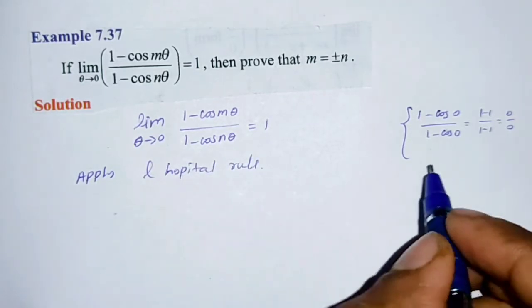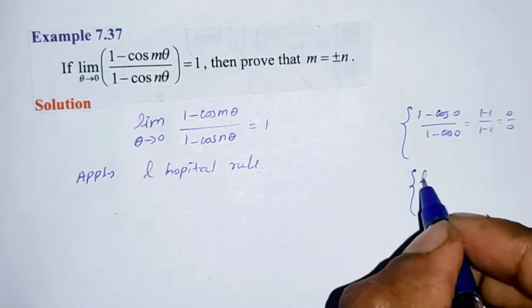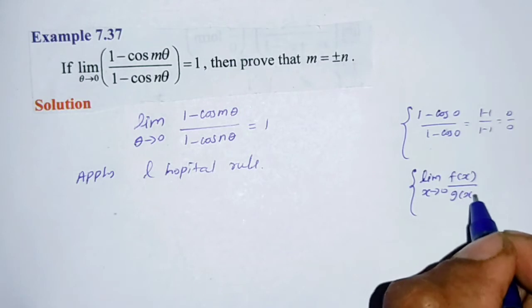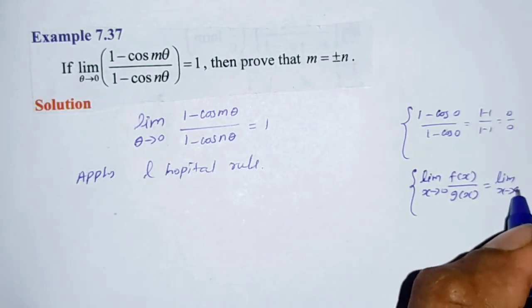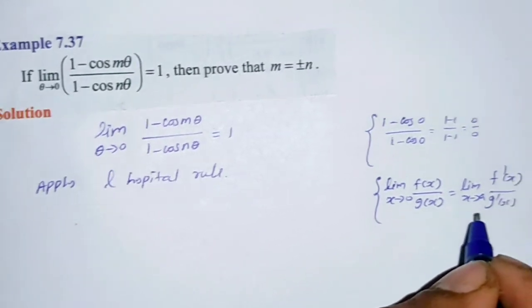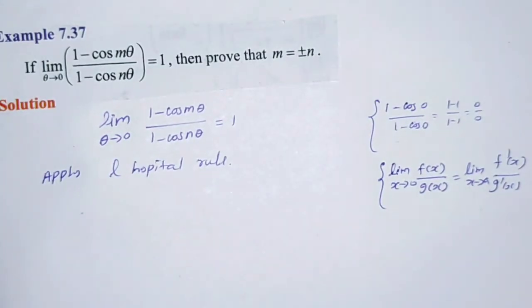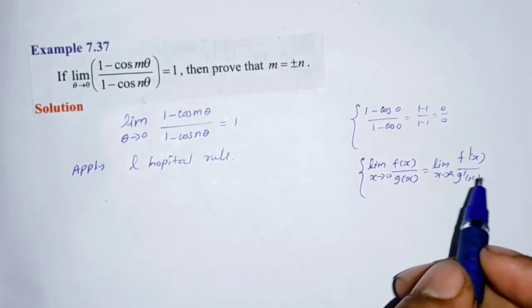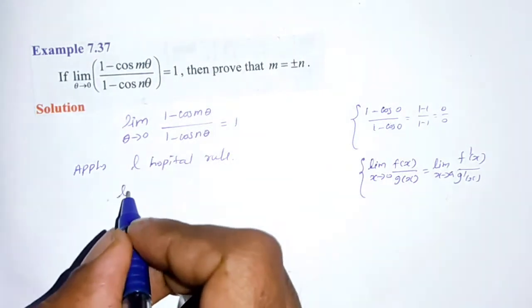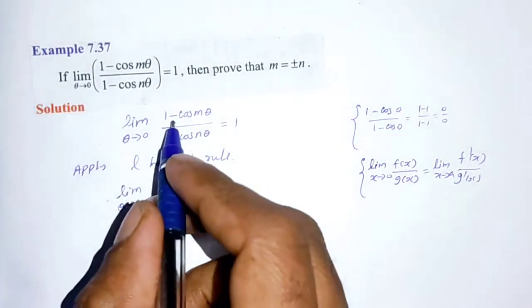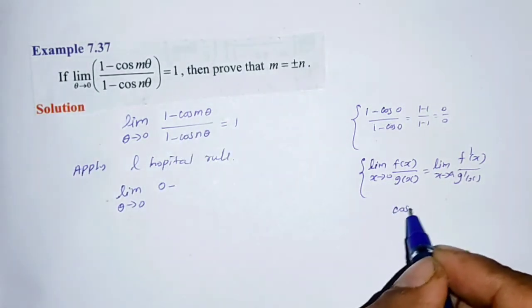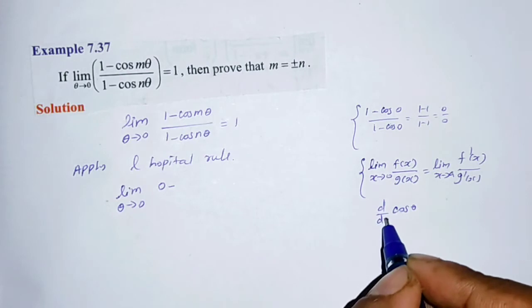L'Hôpital's rule states: the limit of f(x)/g(x) as x tends to a equals the limit of f'(x)/g'(x) as x tends to a. Applying this, we take the limit as theta tends to 0 and differentiate numerator and denominator separately.